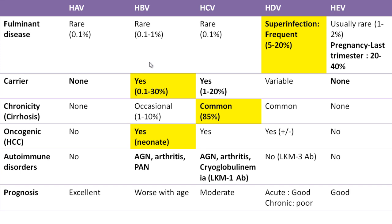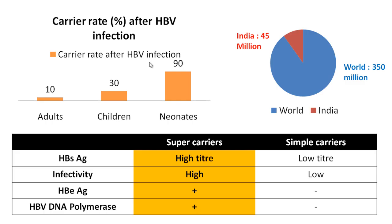Regarding prognosis: A and E always have good prognosis. HDV co-infection is good prognosis; HDV super-infection with hepatitis B is poor prognosis. The worst prognosis, worsening with age, is with hepatitis B virus followed by hepatitis C. The carrier rate of hepatitis B increases as age decreases: 10% in adults, 30% in children, 90% in neonates — because pathogenicity is immune-mediated and neonates are immunosuppressed. Worldwide, hepatitis B infects approximately 350 million people, with 45 million residing in India.